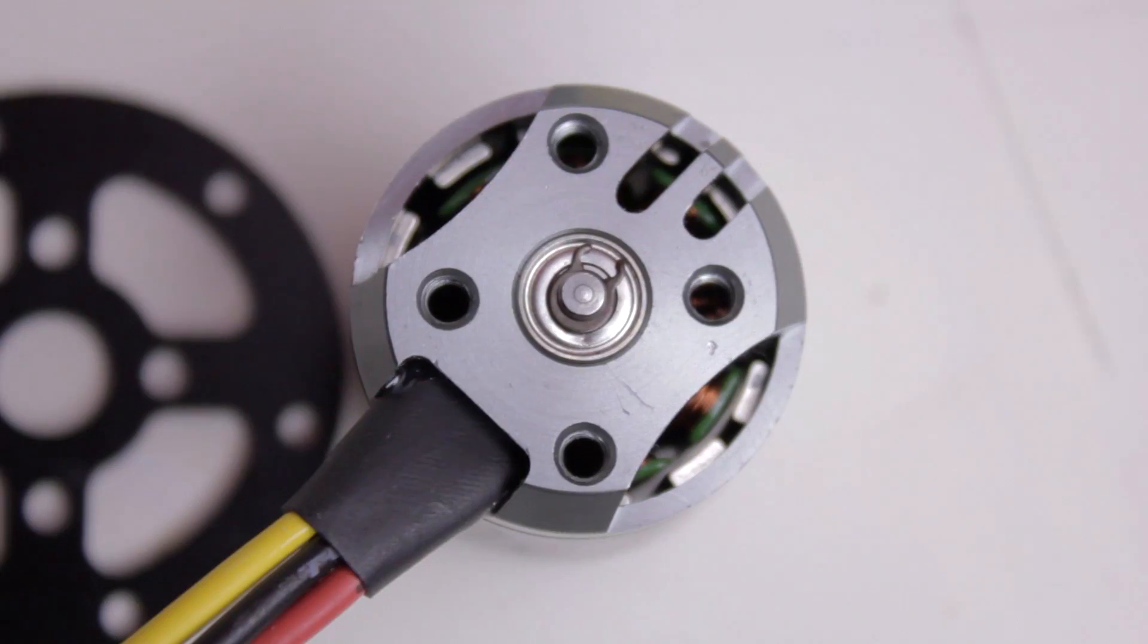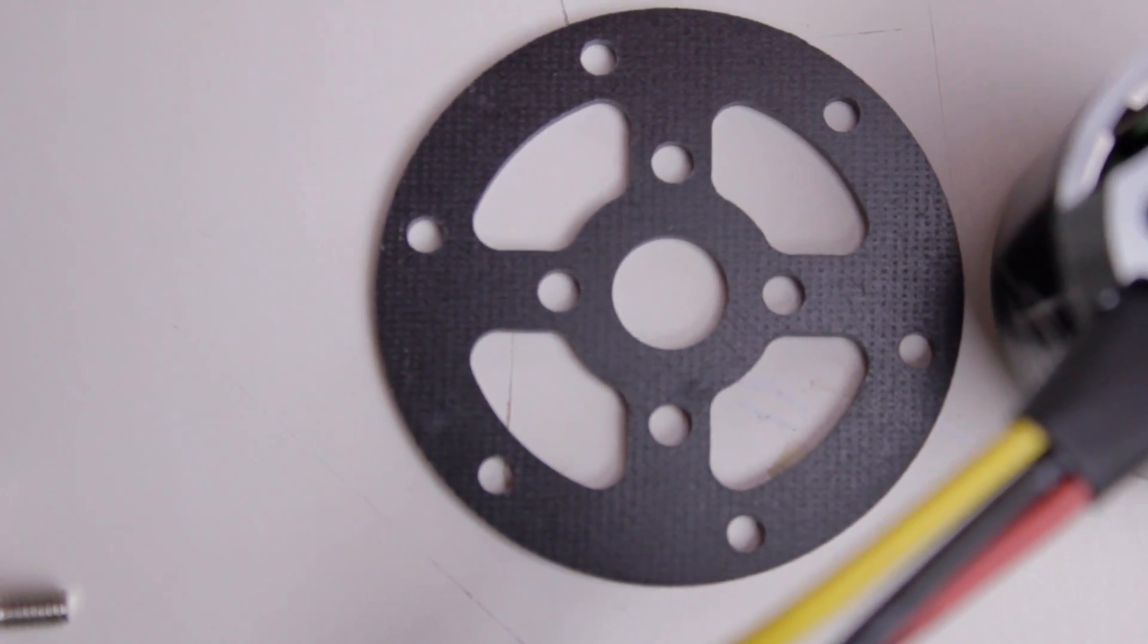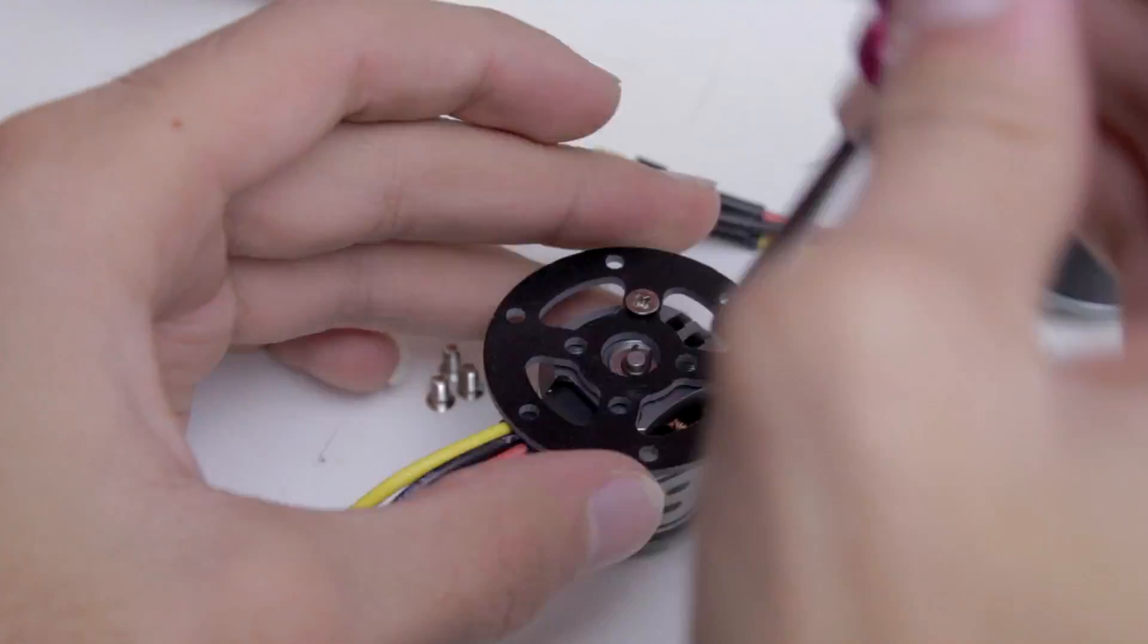First we need to screw the motors onto the mounting plates. There's four holes and four screws, so I'm just going to use the screws from the NTM accessory pack and then screw those in.